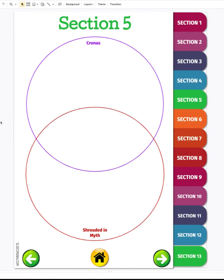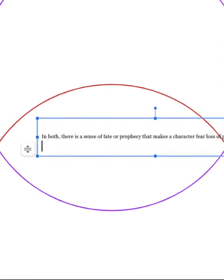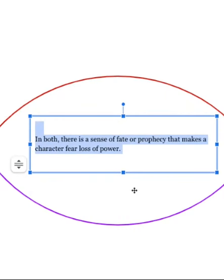So one thing that I noticed in these passages is something that's similar: in both there's a sense of fate or prophecy that makes a character fear loss of power. We notice that in both of those passages, and so I'm going to put that in this middle section.